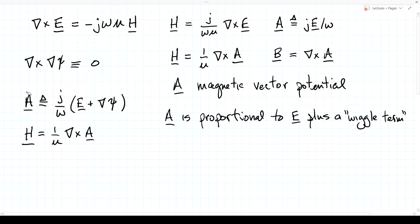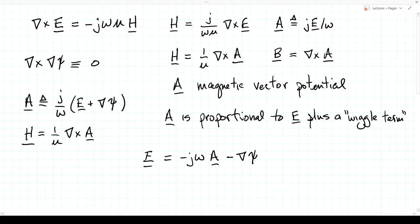Turning this definition around, we can solve for E. Multiplying both sides by j and by minus one, then dividing, we get E equals minus jω times A minus the gradient of ψ. That is how we solve for E in terms of A and the wiggle term. If ω equals zero — the DC or static field case — this first term goes away, and this reduces to E equal to minus the gradient of a potential function. In that case, ψ would be the voltage, the electrostatic potential.